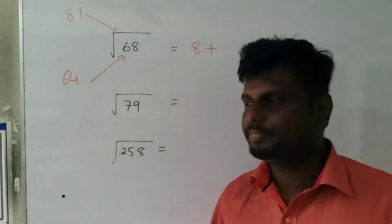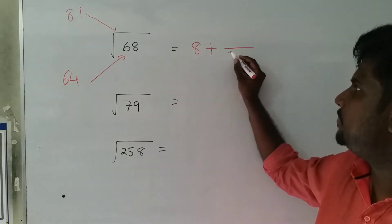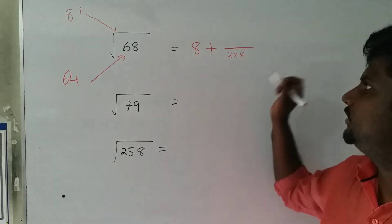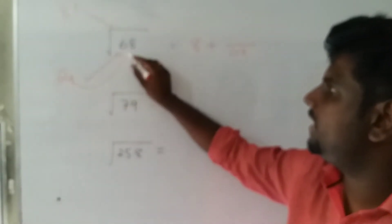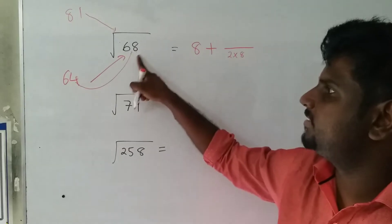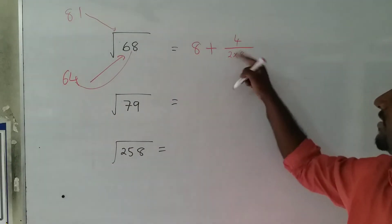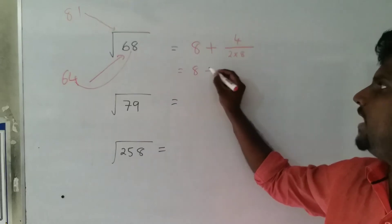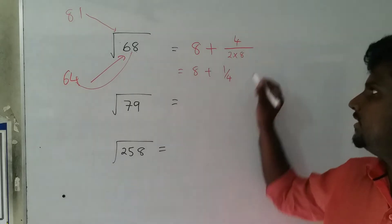Then what we are going to do - you double this and put it down. What you are going to do is find the difference between these two numbers: 68 minus 64 equals 4. So you can simplify this: 8 plus 4 over 16, which is 8 plus 1/4.